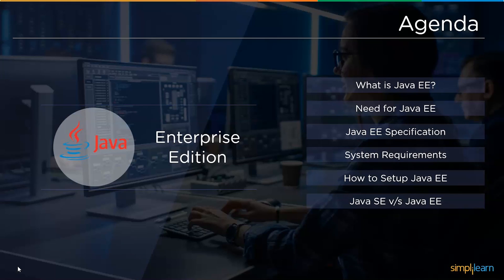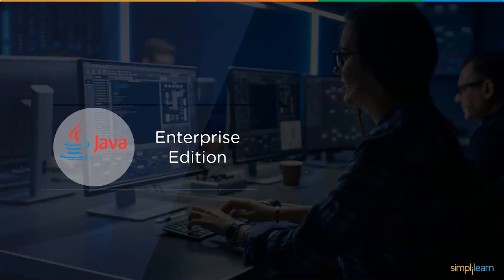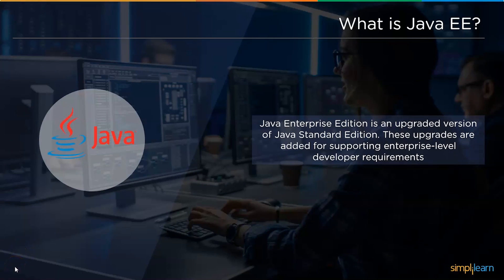Let's begin with our first topic: what exactly is Java Enterprise Edition? Java EE stands for Java Enterprise Edition, which was earlier known as J2EE and is currently known as Jakarta EE. Java Enterprise Edition provides a platform for developers with enterprise features such as distributed computing and web services.